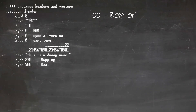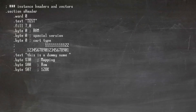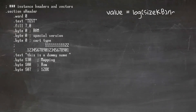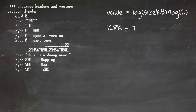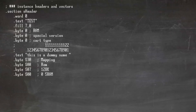This is followed by the ROM type: zero is ROM only, one is ROM plus RAM, two is ROM plus RAM plus battery. The upper nibble describes which expansion chips you have, if any. Next is ROM size — this is the size in log base 2 of the ROM size in kilobytes. To convert: 128k is 7, 256k is 8, 512k is 9, 1 meg is 10, 2 meg is 11, 4 meg is 12.